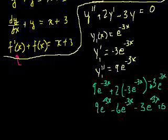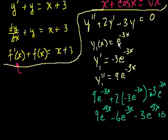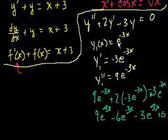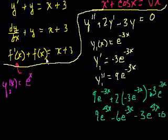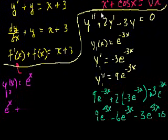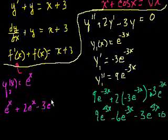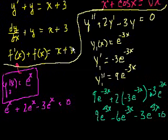Now there's something interesting: this might not be the only solution. We'll learn that often the solution isn't just one function — it could be a class of functions. They show us another solution: y2 of x equals e to the x. We can verify this — the first and second derivatives of e to the x are just e to the x. So substituting: e to the x plus 2 times e to the x minus 3 times e to the x gives us 1 plus 2 minus 3, which equals 0 again. So y2 is also a solution.